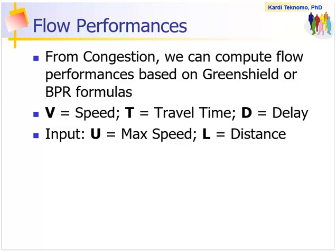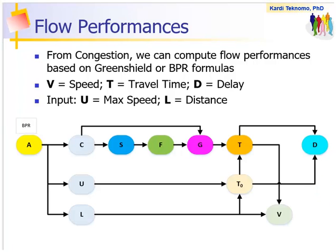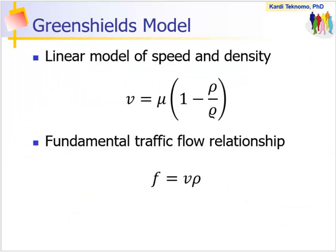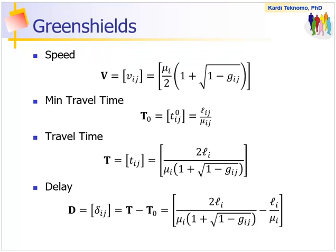Once we get the congestion matrix, we can get the speed, travel time, and delay, and everything else. For instance, from here, we can also infer the amount of energy or air pollution if you want to. Two most prominent ways to compute the flow performance are based on Greenshield or BPR formulas. Greenshield model assumes linear correlation between speed and density. Here are the formulas that you can simply plug in numbers. Greenshield can accommodate congestion value up to 1, which is based on the basic definition of capacity equal to maximum flow.